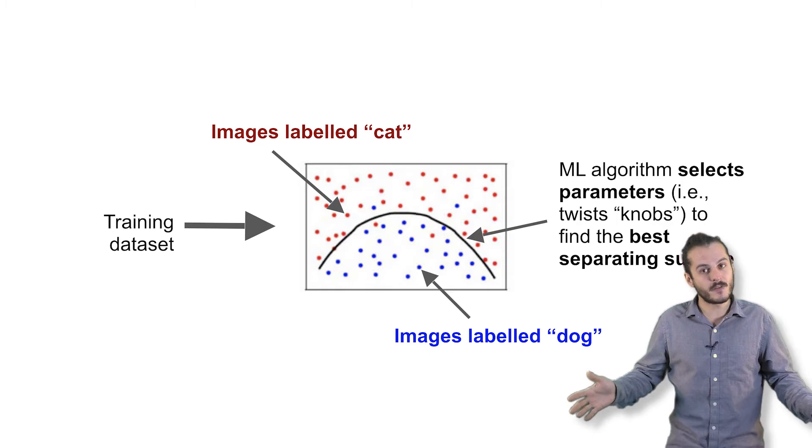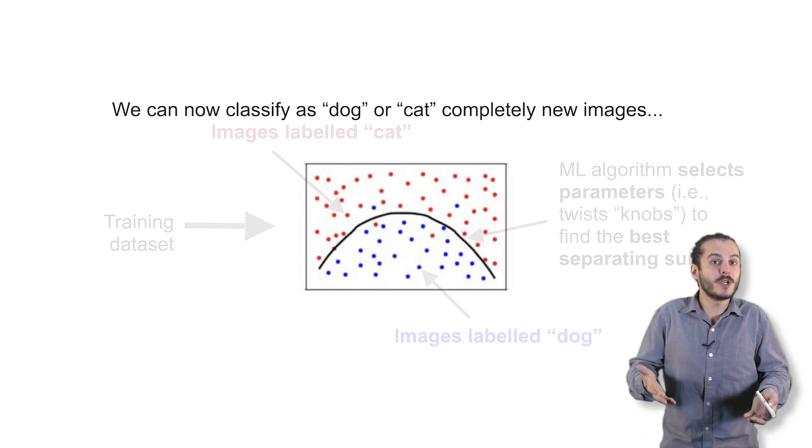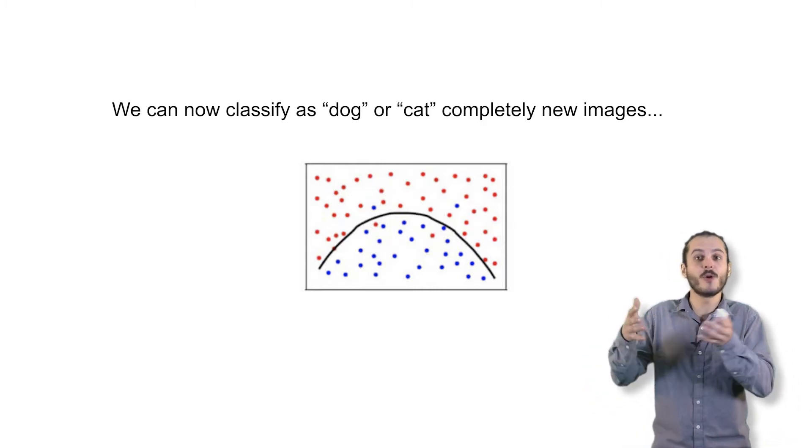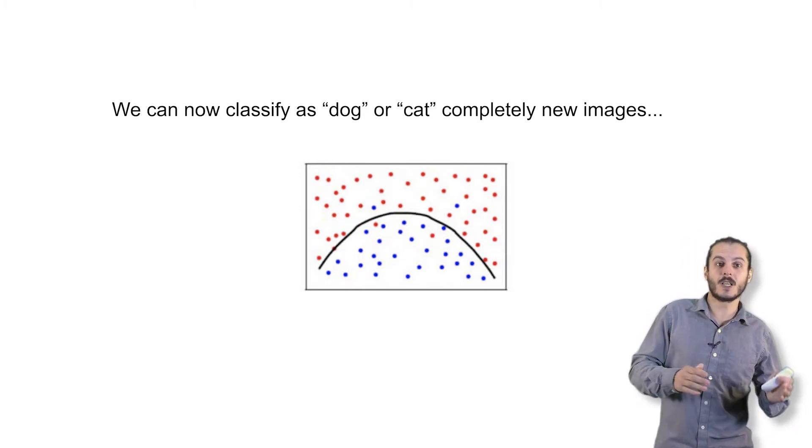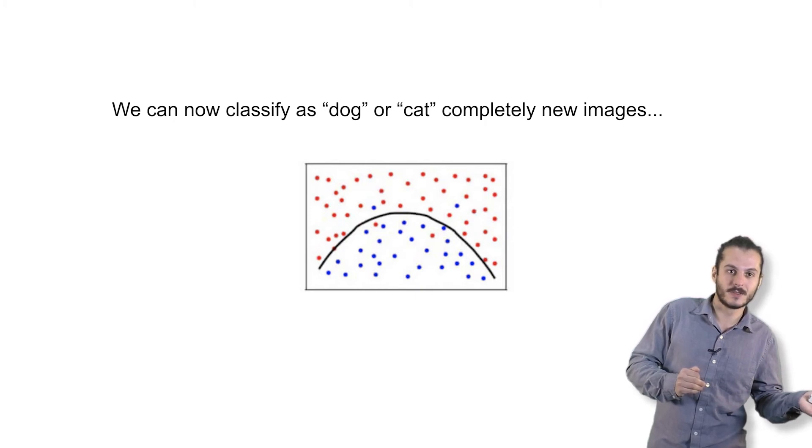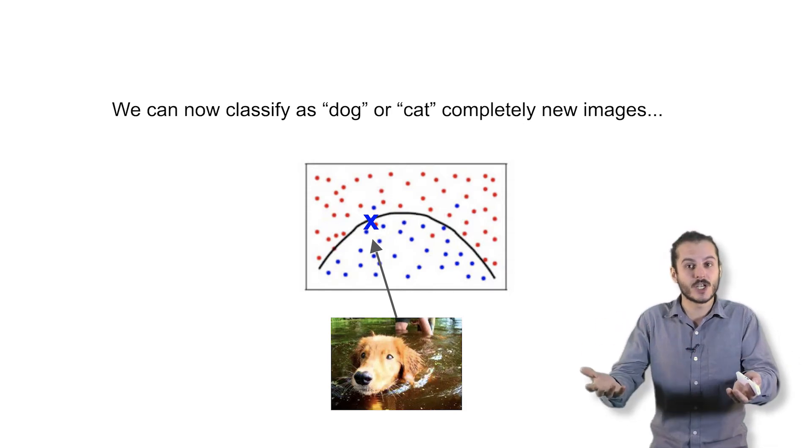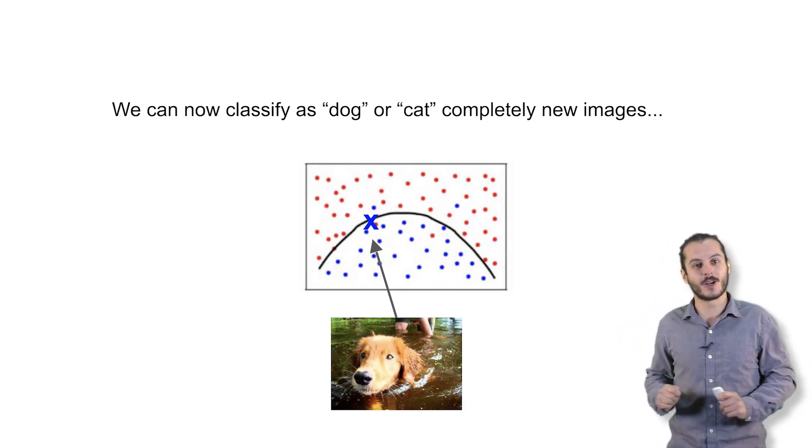Once it's found this surface, what it can do is it can now take an image it has never seen before, which is also another point in this space. And it can say, does it lie on the dog side of the surface, or the cat side of the surface? Given which side it lies on, it makes a prediction about whether this image it has never seen before is a dog or cat.